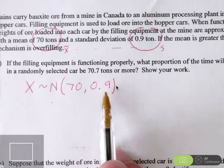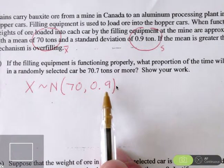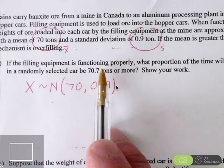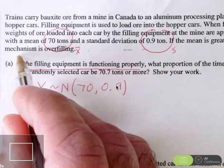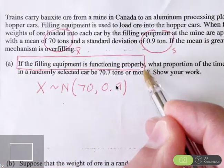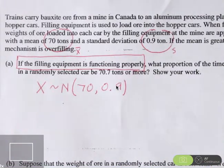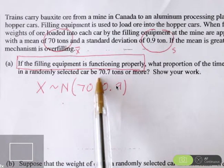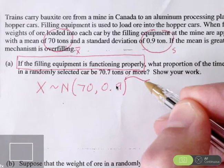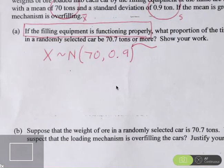We want to make sure that even though there's variability, that mean sticks around 70. If the filling equipment is functioning properly, here we have an assumption. If the filling equipment is loading the hopper cars properly, what proportion of the time will the weight in a randomly selected car be 70.7 tons or more? It probably helps to draw a picture of what's going on here.